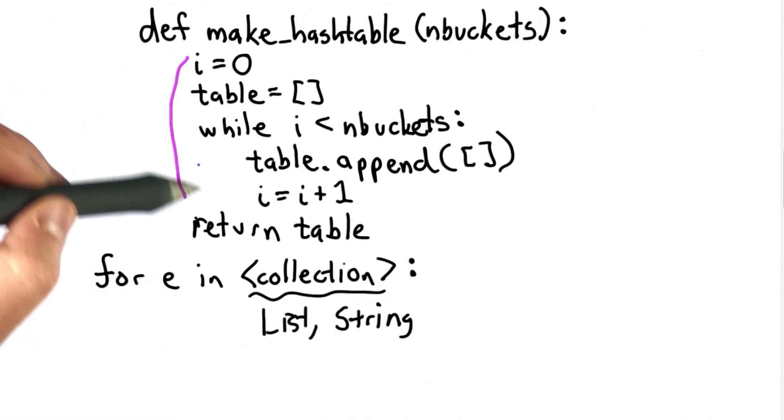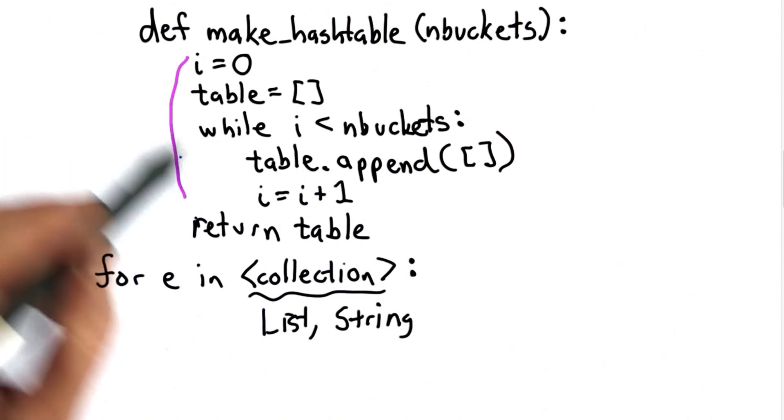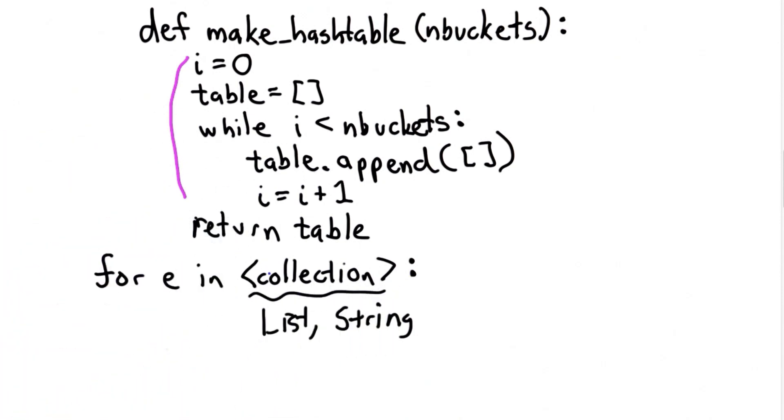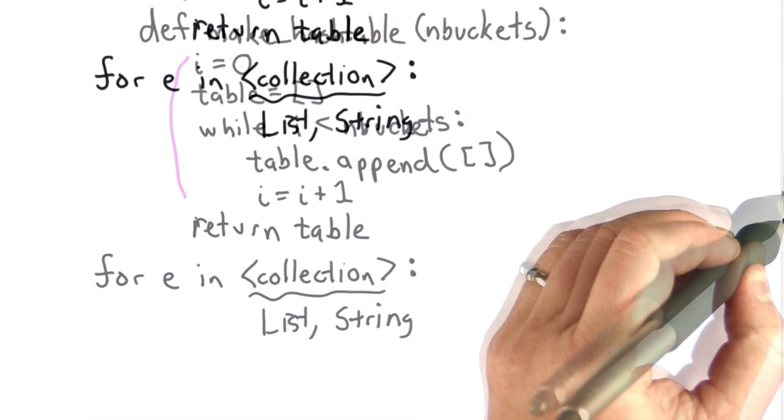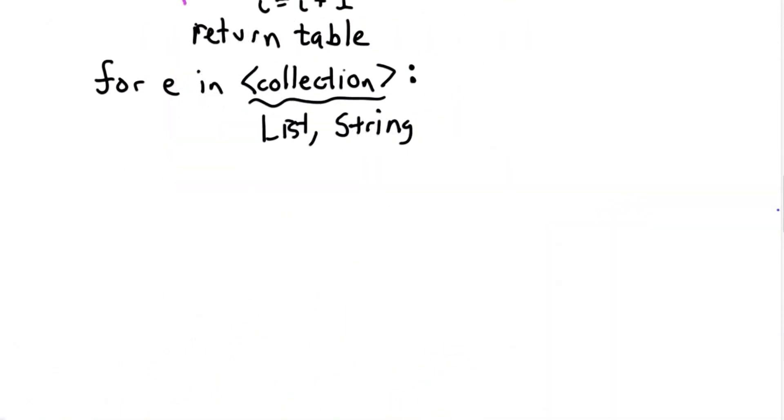So what we would like in order to be able to define a procedure like make_hashtable is to have a list which is the numbers from 0 to n buckets minus 1. Python provides an easy way to do that. It's called range.